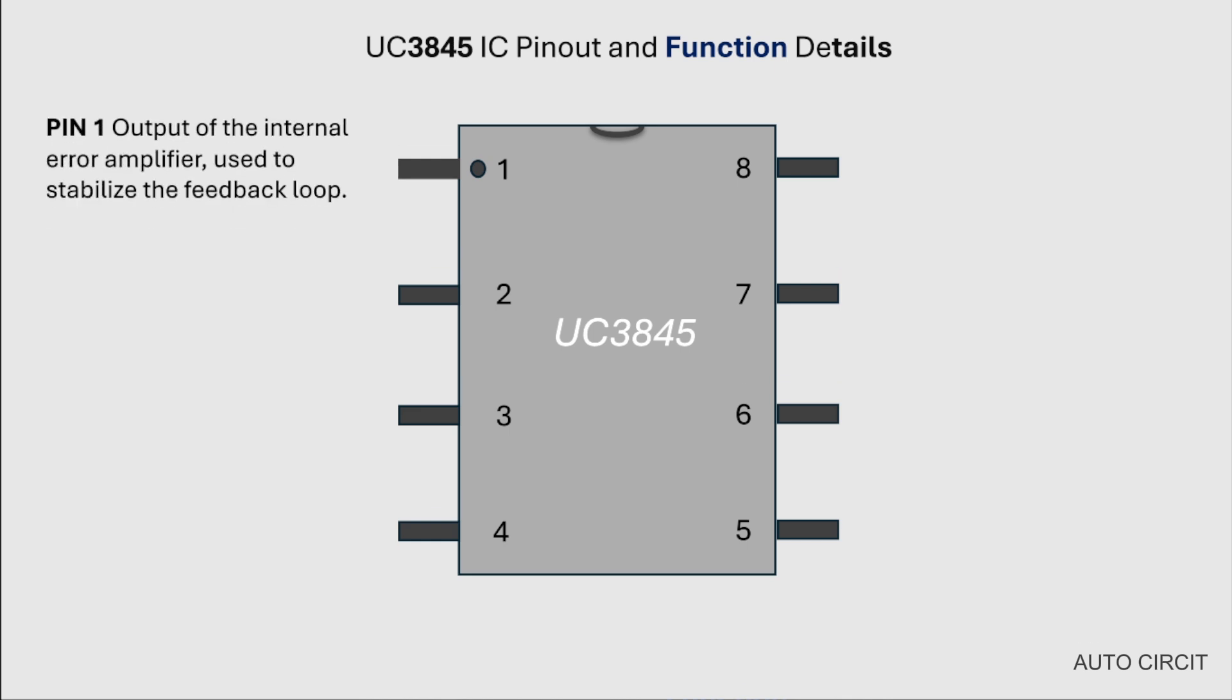Pin 1: Output of the internal error amplifier, used to stabilize the feedback loop. Pin 2: Receives the feedback voltage from the output of the power supply and compares it with the internal 2.5 volt reference.